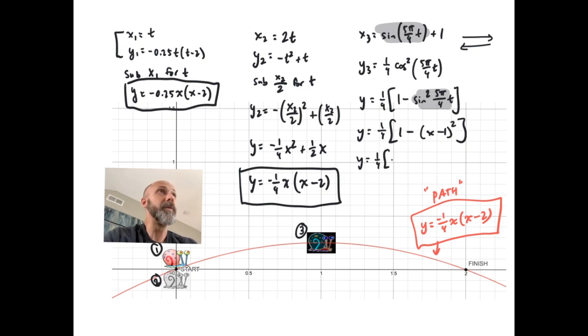So I got y = 1/4 times, when you work out the details there, you get -x² + 2x. And when you pull out a -x, you get y = -1/4, or -1/4 x(x-2). So all along the same path.